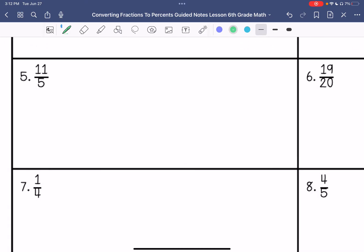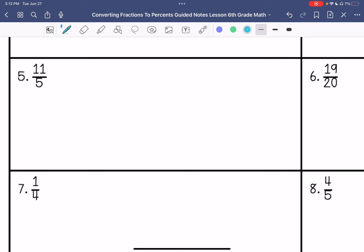All right, number five. 11 over 5. So this is an improper fraction. So my percent is going to be over 100. So what times 5 equals 100? That is times 20. So if I do 11 times 20, it's 220. So it's 220%.